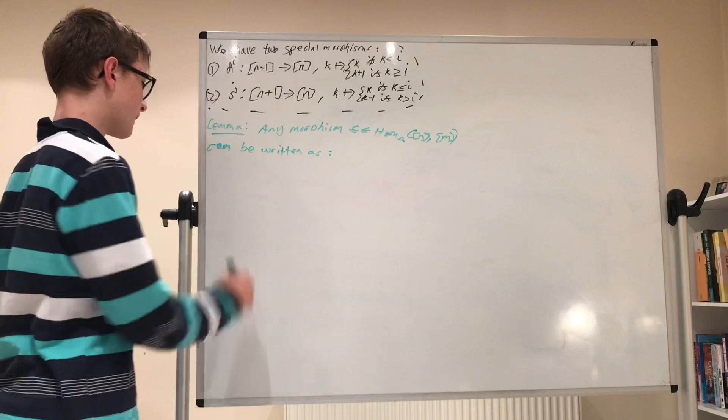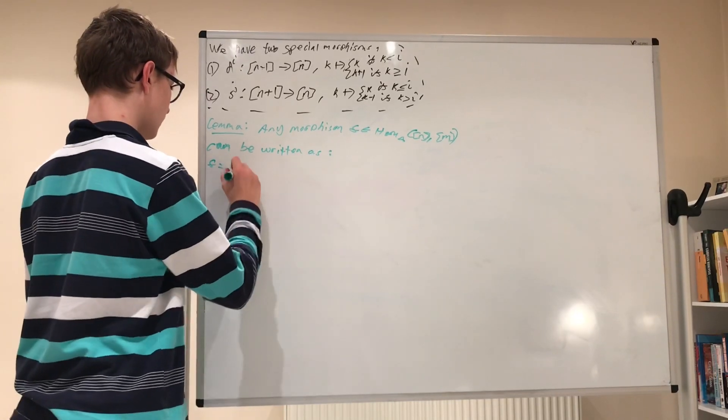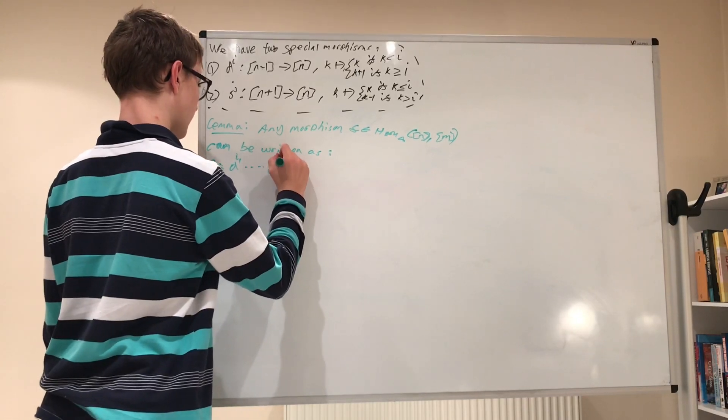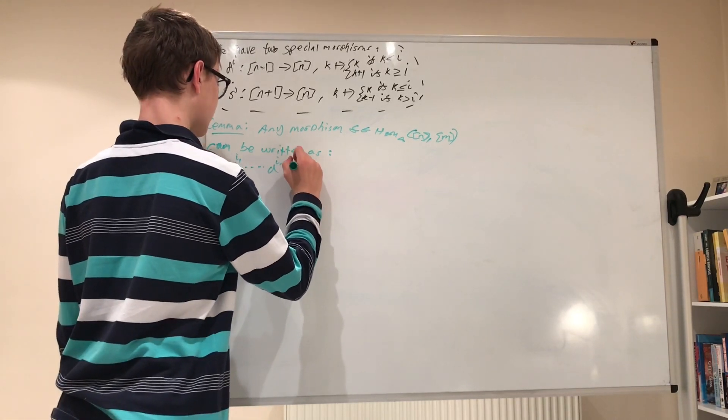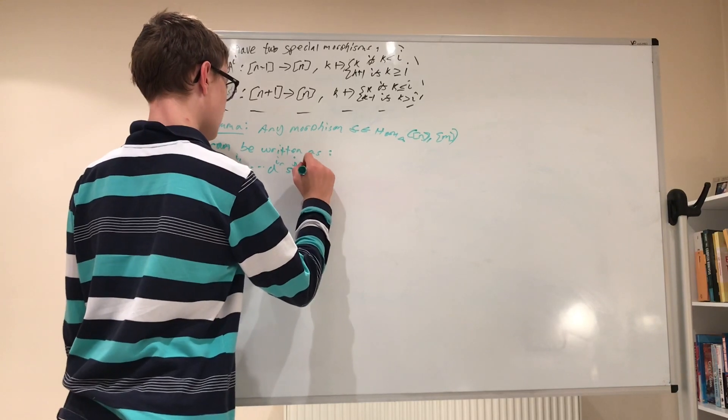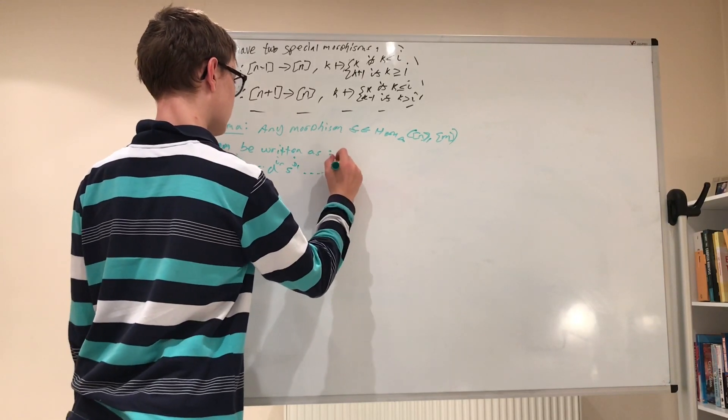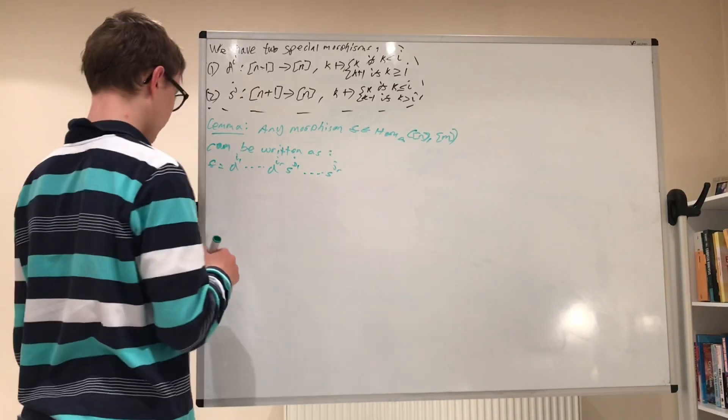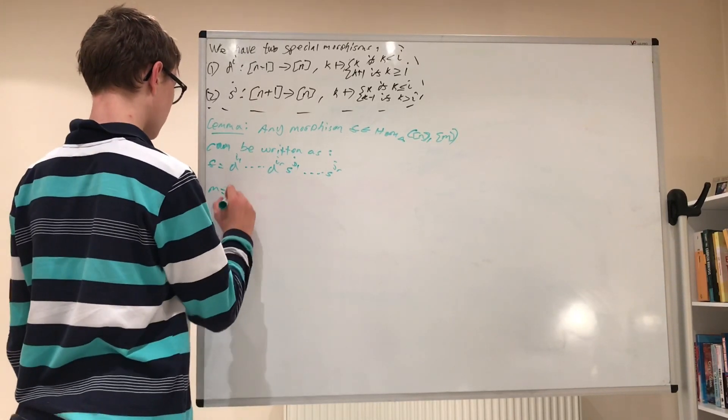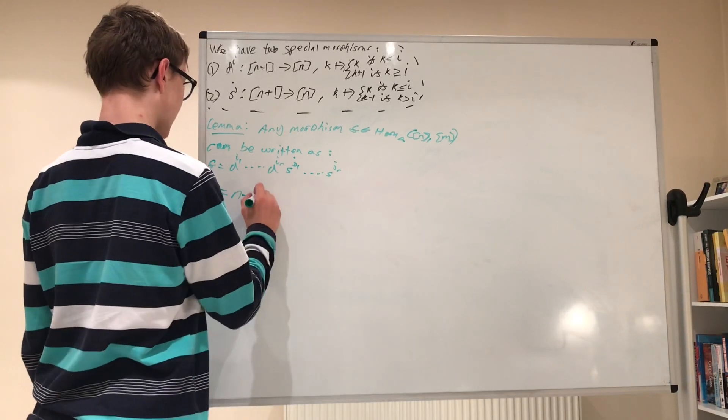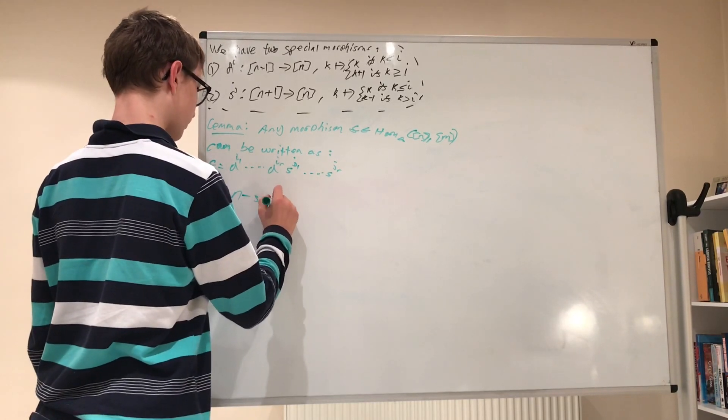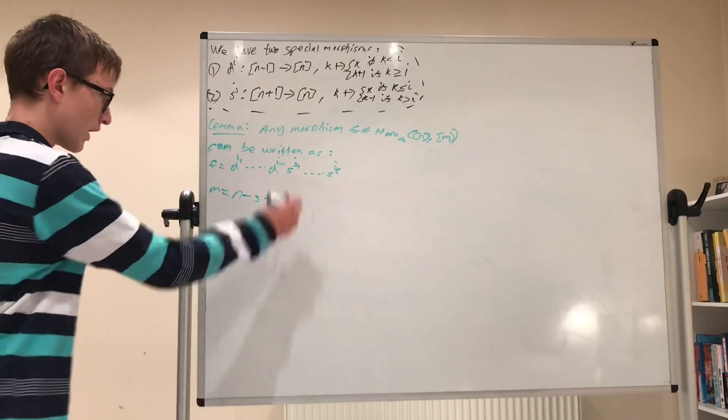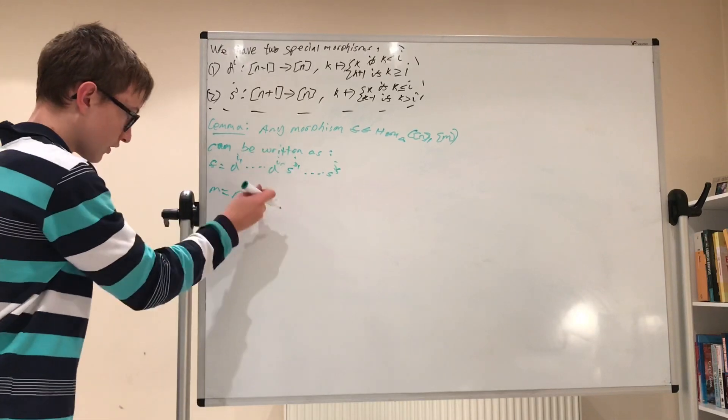Okay, f equals di1 up until dir, sj1 up until sjs. And be careful, this does satisfy some conditions. So, m must equal n minus s plus r. Sorry, this should say s, not r. Minus s plus r, where this r is this r and this s is this s.